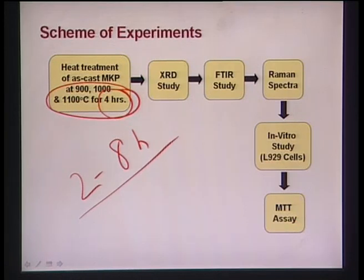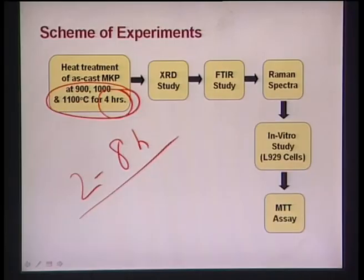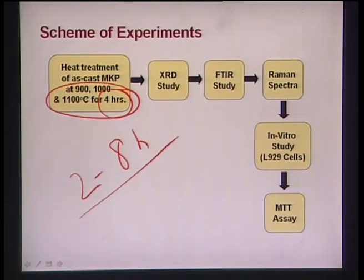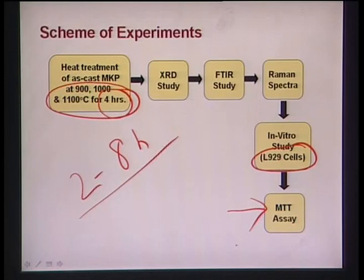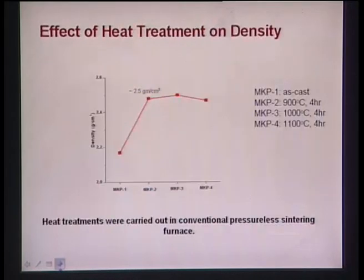XRD was used to identify the different phase assemblages. FTIR was used to confirm the presence of phosphate groups and OH⁻ vibration peaks. Raman spectroscopy provided complementary information to the XRD results, allowing confident identification of certain phases. Cytocompatibility was assessed using L929 cell lines, and an MTT assay was carried out to quantify cell viability.